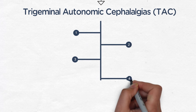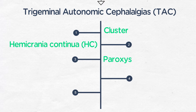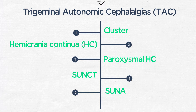There are several different types of TACs: cluster headaches, hemicrania continua, paroxysmal hemicrania continua, and the rarer short-lasting unilateral neuralgia form headache attacks with conjunctival injection and tearing, abbreviated SUNT, or short-lasting unilateral neuralgia form headache attacks with cranial autonomic symptoms, SUNA, and long-lasting autonomic symptoms with hemicranias, LASH.